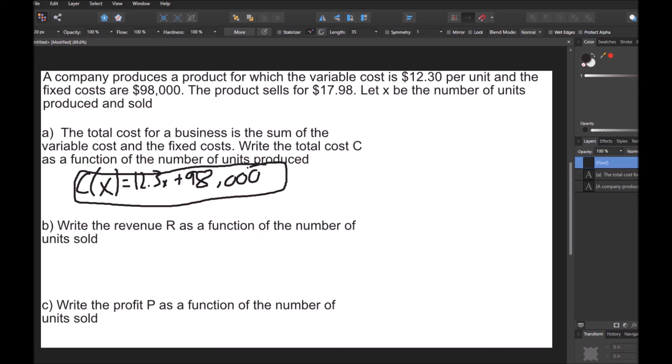And then for part B, it says write the revenue as a function of the number of units sold. And the revenue is just purely the amount of money they're going to be making. So that's going to be R(X) equals 17.98X. And that's just because we're only focusing on how much money we're making. We're not looking at any of the costs. We're just looking at the revenue.